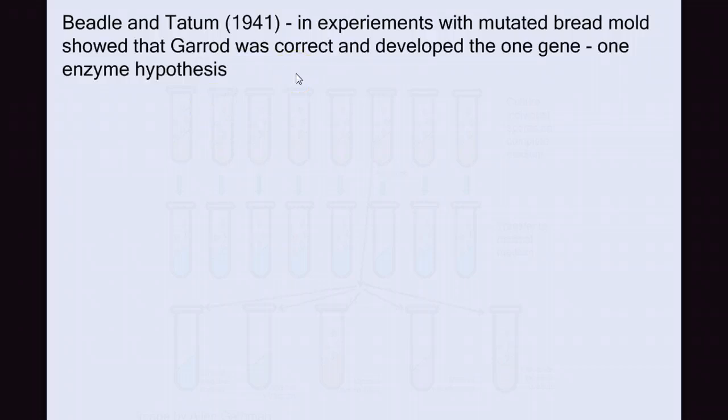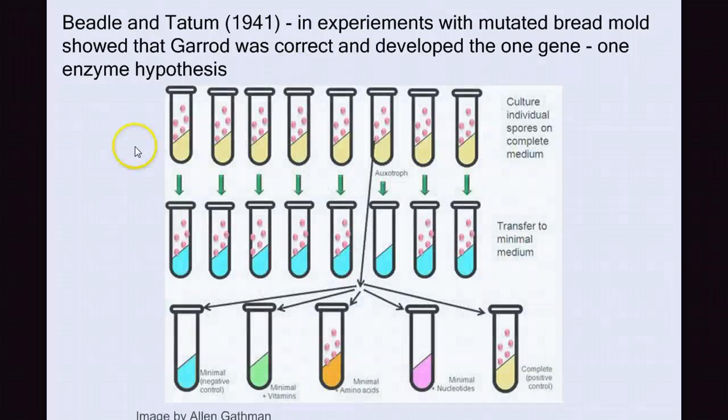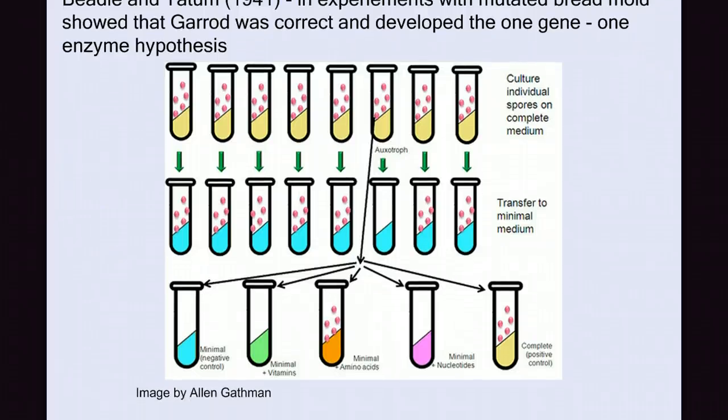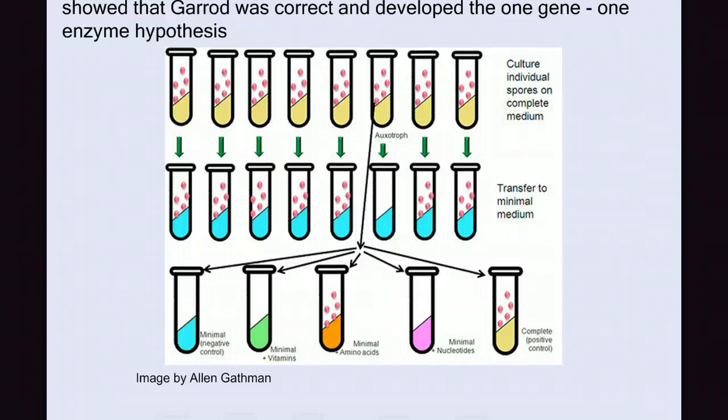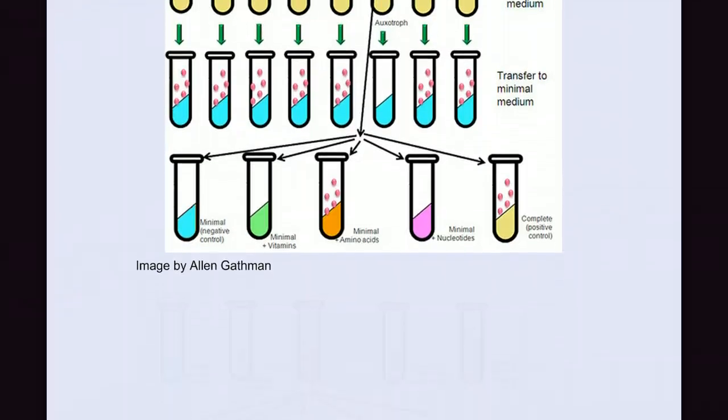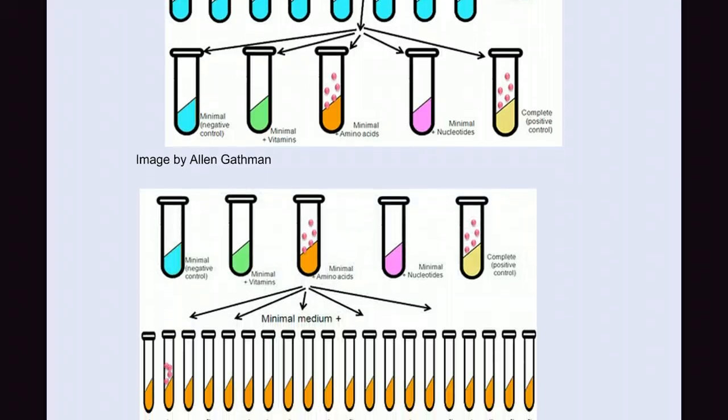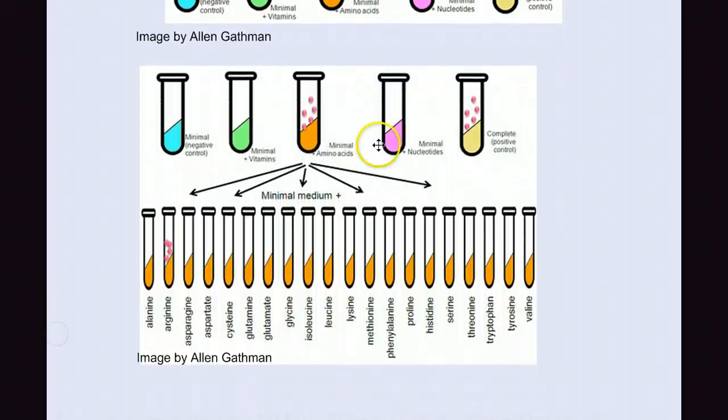This idea was picked up by Beadle and Tatum in 1941 in a series of very complicated or very tedious experiments using mutated bread molds. They found evidence to support this idea that Garrod was correct, and they developed what's called the one gene, one enzyme hypothesis. We're going to talk about this experiment in detail in class in terms of what these pictures mean, but it's pretty interesting and groundbreaking.